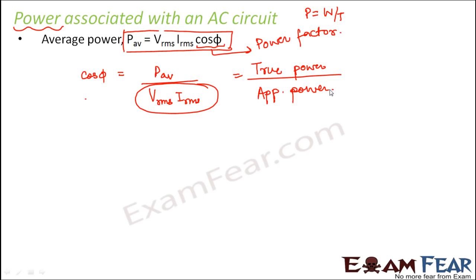Power factor plays a very critical role when we calculate power associated with an AC circuit, because in an AC circuit you might have different elements — resistors, capacitors, or inductors. The phase relationship between voltage and current depends upon the elements present in the circuit. So φ, the phase difference, keeps changing depending upon the elements, making cos φ very critical.